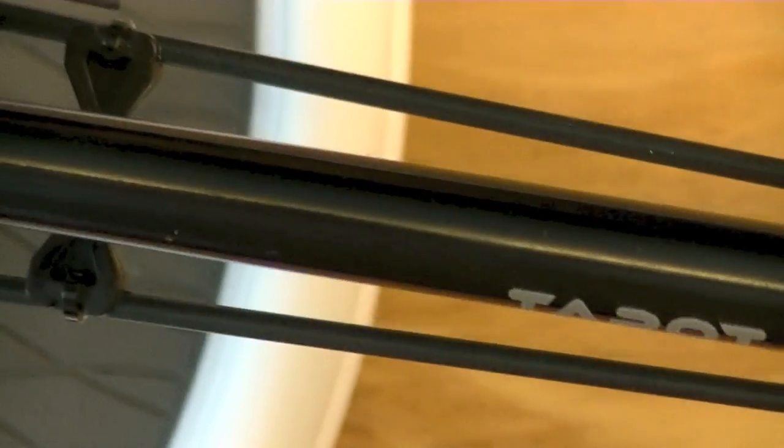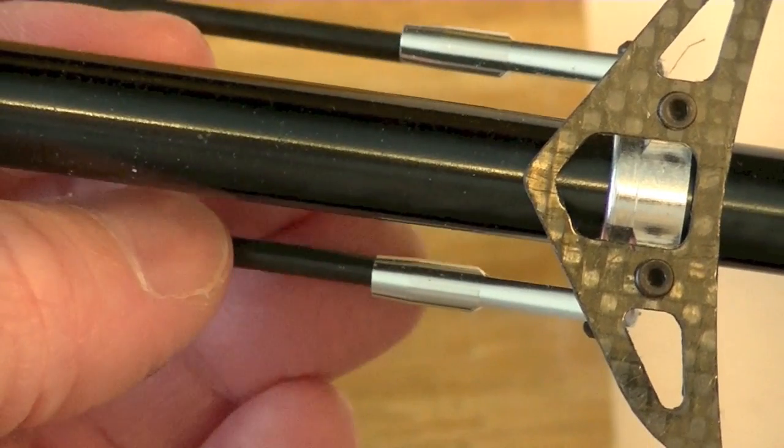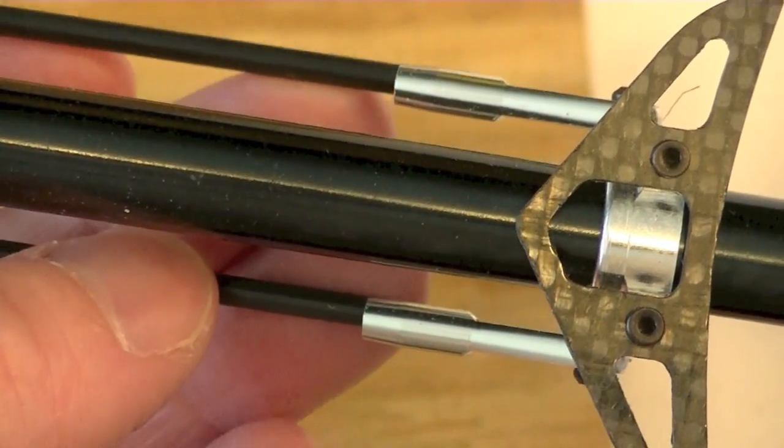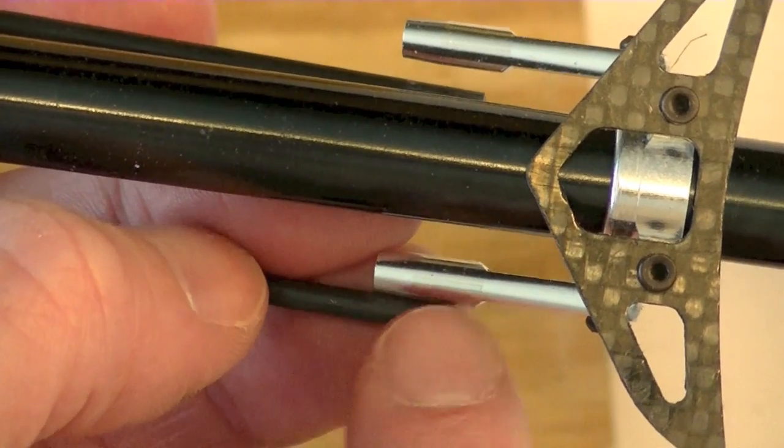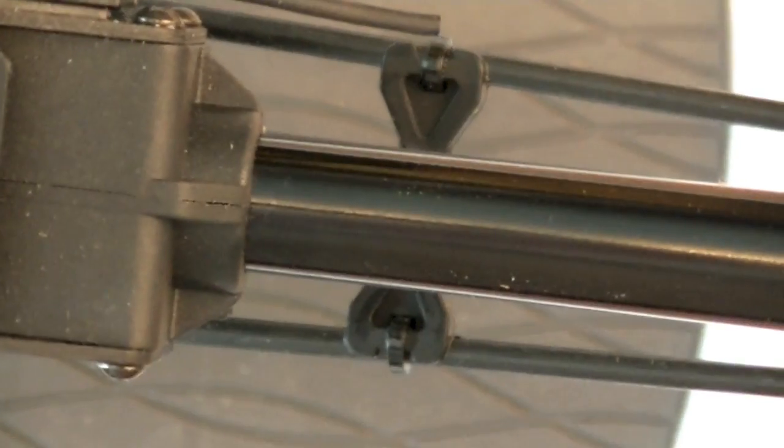I did have my little tail bracket here, which held everything together in one place, which is why it looks the way it does. But this basically, this glue that holds these ends on just popped right off. So I am going to re-CA glue this, put them back together, and then I have my tail boom pushed all the way in.